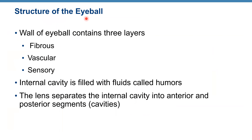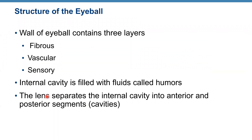Now, structure of the eyeball. The eyeball has a wall and an internal cavity. The wall contains three layers: fibrous, vascular, and sensory. The internal cavity is filled with fluid called humors, and the cavity is separated into anterior and posterior segments by the lens.